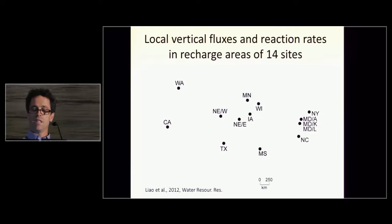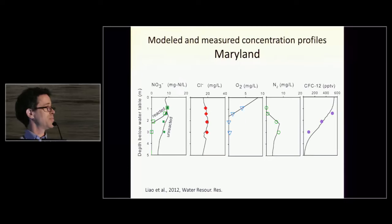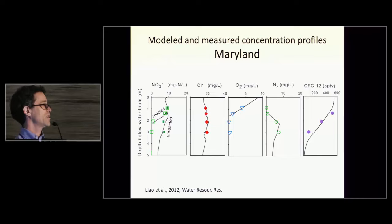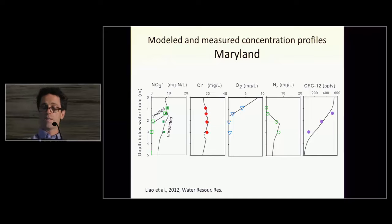For these 14 sites, here are modeled and measured concentration profiles from the Maryland site. We have vertical profiles of nitrate — this is the unreacted nitrate, which is the actual measured nitrate concentration plus the excess nitrogen from denitrification. Chloride is included in this study. Oxygen decays and then denitrification begins. This is the actual nitrate measured in the aquifer, excess nitrogen from denitrification, and the age tracer CFC-12. We're able to get a pretty good match between the data and the model at these intensive sites.